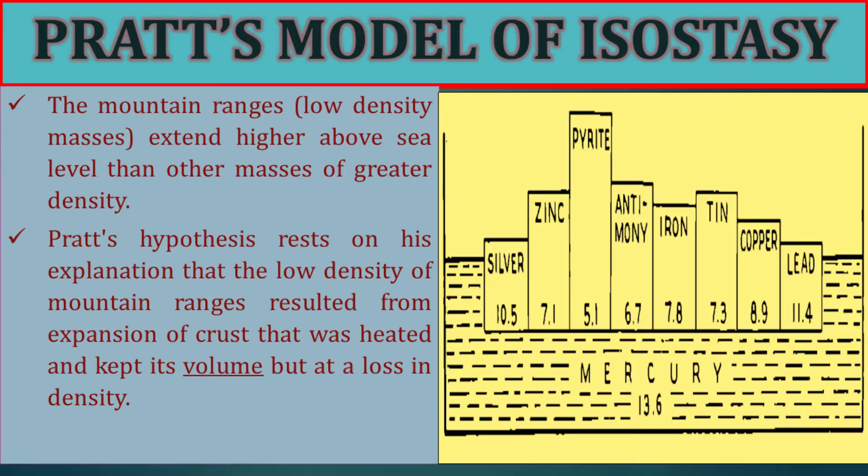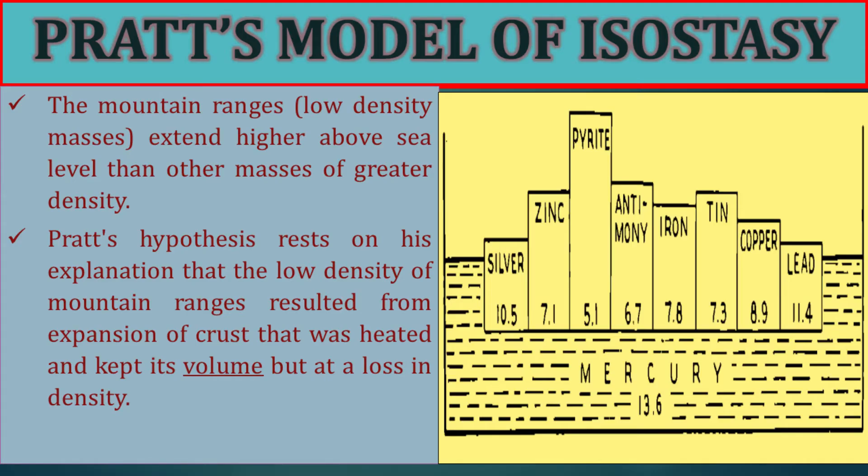The second theory regarding isostasy was proposed by John Henry Pratt. His hypothesis states that mountain ranges have low-density masses and extend higher above sea level than other masses of greater density. Pratt's hypothesis arose from his explanation that the low density of mountain ranges resulted from the expansion of the crust that was heated and increased in volume but decreased in density. Pratt suggests that mountains do not have roots — that is a significant point — but instead the topography is compensated by less dense, lighter blocks, and that all topography was compensated at the same depth.